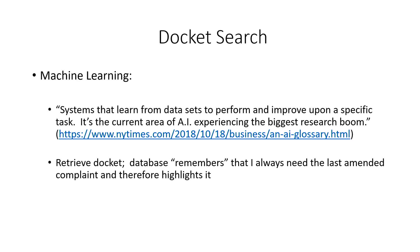Remembering what you do and trying to help you based off what you typically do — so I retrieve dockets a lot and I always need the last amended complaint. The problem is sometimes the dockets are huge and the last amended complaint is way at the bottom. I don't know which number it would be, so I'll just do a Control+Find on the docket sheet for 'amended complaint' and keep paging through. If Bloomberg Law, which is what I usually use, was actually doing machine learning, you'd think it could have like a little Clippy or some icon saying, 'Hey Amy, you usually want the last amended complaint — here it is on this docket.' That's my wish list for the robot at Bloomberg Law.